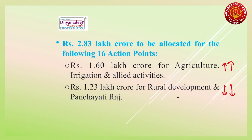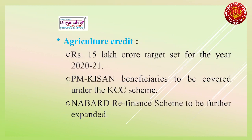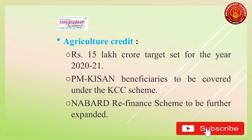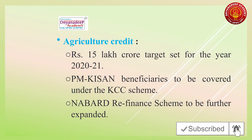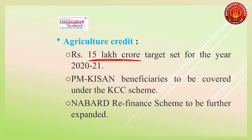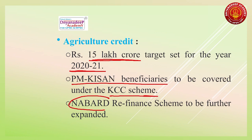Keep some targets in mind — don't mug up numbers but remember the key targets. This year's budget set a target of distributing almost 15 lakh crore as agricultural credit by 2020-21. Second, PM Kisan beneficiaries will be brought under the Kisan Credit Card scheme. Third, they are going to expand the functions of NABARD for refinancing.